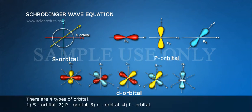There are four types of orbital: 1. S orbital, 2. P orbital, 3. D orbital, 4. F orbital.